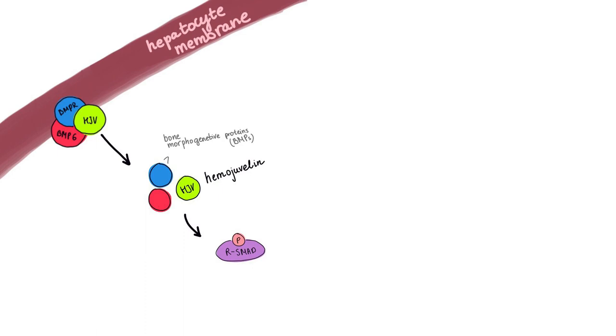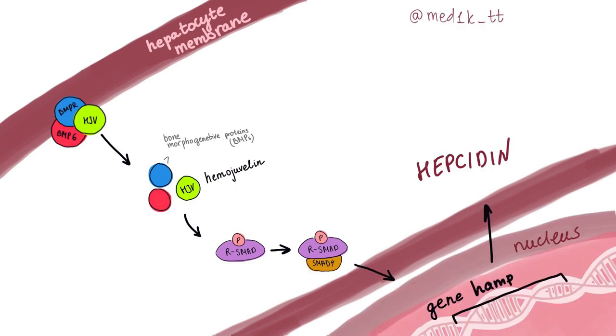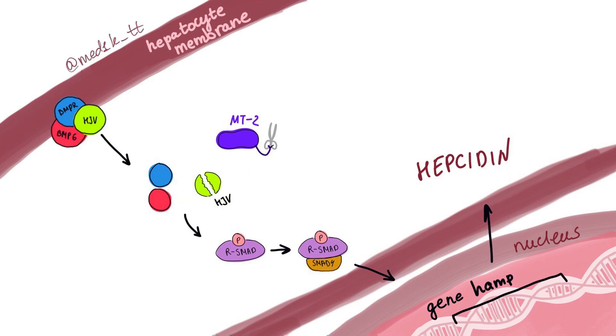After phosphorylation has occurred, SMAD binds to the SMAD4 mediator and then the formed complex is transported to the nucleus where it acts as a transcription factor regulating the transcription of genes, including the HAMP gene, which encodes the hepcidin. To prevent excessive hepcidin production, the enzyme metriptase comes into play. It cleaves hemojuvelin, thus disrupting the entire molecular pathway.